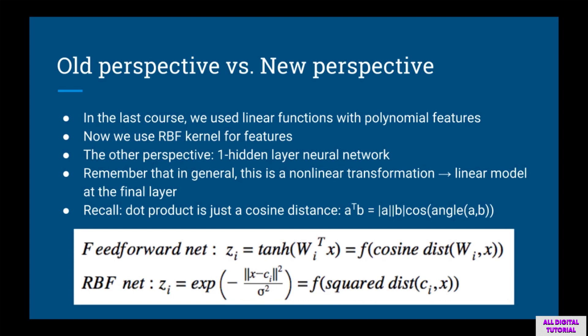From the neural network perspective, this is a one hidden layer neural network — a nonlinear transformation at the hidden layer and a linear model for the final layer. An even closer connection: a dot product is also the cosine distance. In both cases, we first calculate some kind of distance between the parameter and the input, then apply a nonlinear function on top of that, giving the value at one hidden unit. It's an interesting connection, but that's as far as it goes.